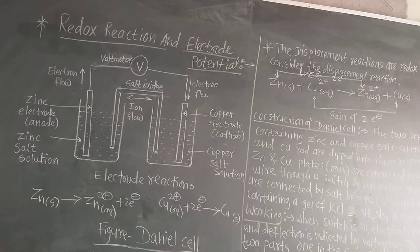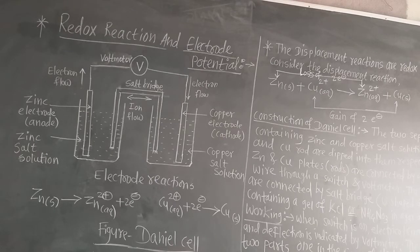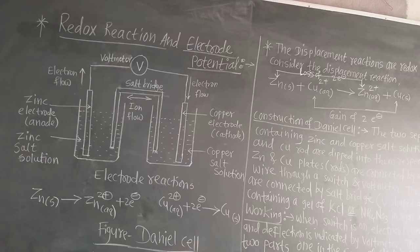These redox reactions are displacement reactions. That means the more reactive metal displaces the less reactive metal. What is meant by displacement?